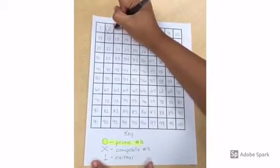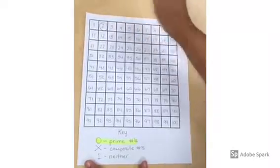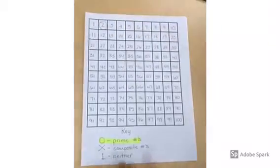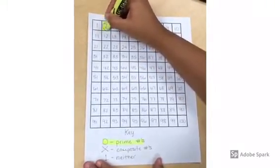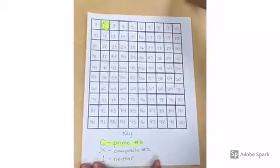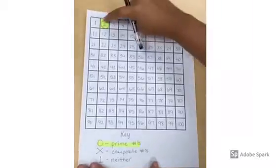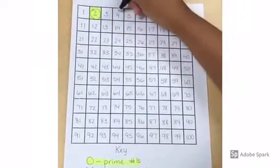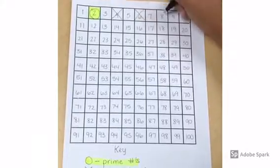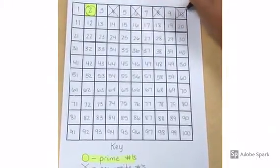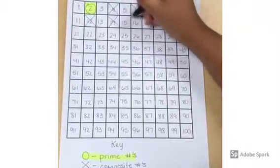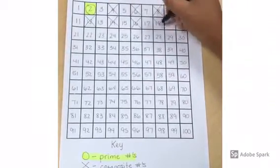The first prime number that you're going to circle is two. You can highlight now or later at the very end. After you have circled your prime number two, cross out all the multiples of two. You'll start to notice a pattern — all the multiples of two are even numbers.